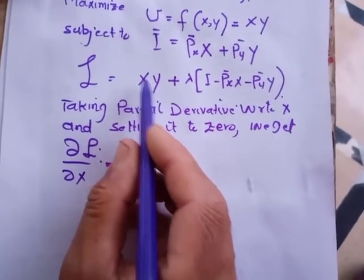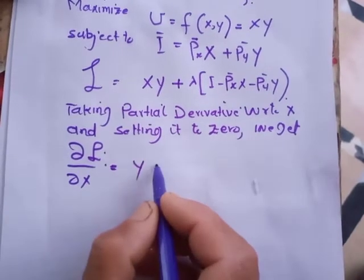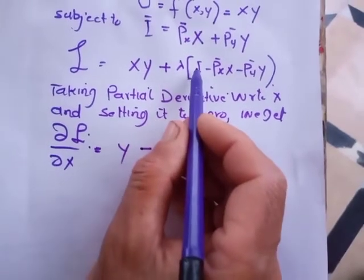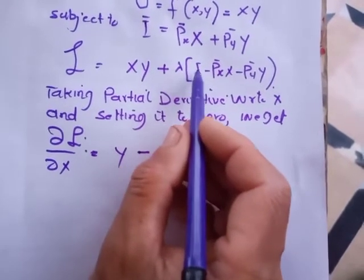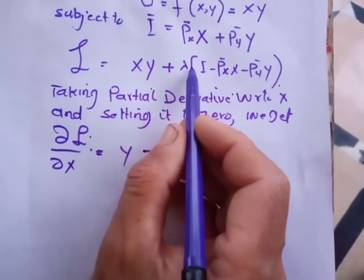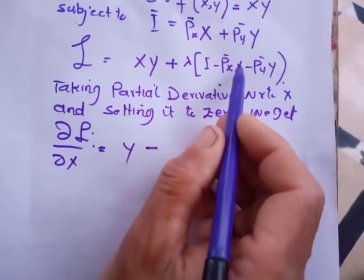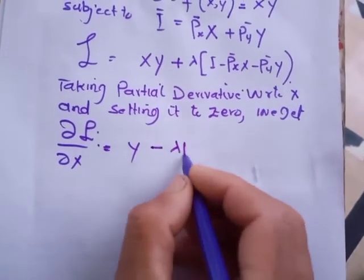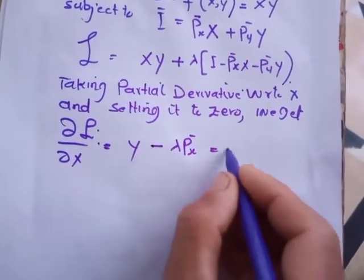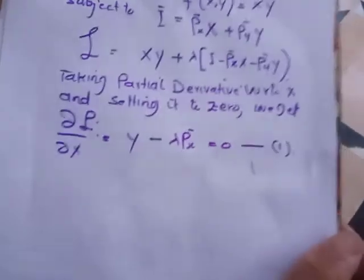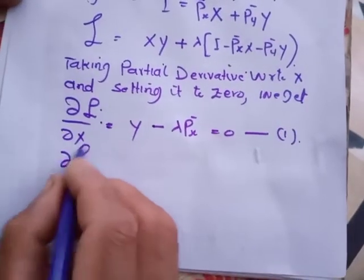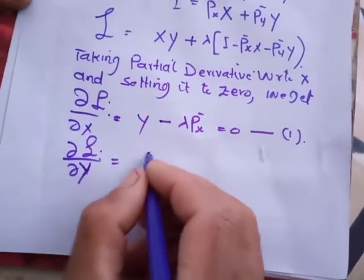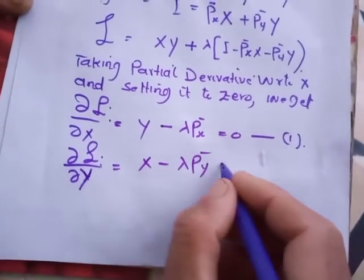The derivative is 0. Here the derivative of x is 1, and we are left with y minus lambda Px equal to 0. Similarly, differentiating this composite function with respect to y, we get x minus lambda Py equal to 0.